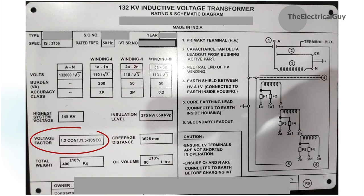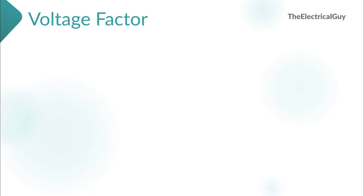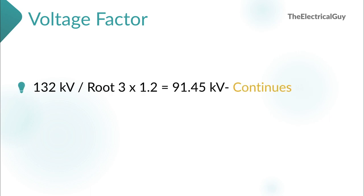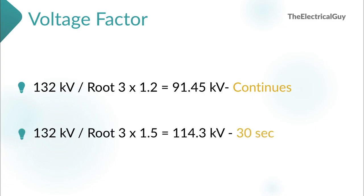The next parameter is voltage factor. On the nameplate it is mentioned as 1.2 continuous and 1.5 for 30 seconds. 1.2 continuous means the IVT is capable of sustaining 132kV/root 3 multiplied by 1.2 — that is 91.45kV — continuously. In normal conditions, only 132kV/root 3, approximately 76kV, will flow. But the IVT can handle 91.45kV continuously. 1.5 for 30 seconds means the IVT can take 132kV/root 3 multiplied by 1.5 — that is 114.3kV — for 30 seconds. Voltage factor is important during abnormal system conditions which may cause high transient voltage or voltage swell.